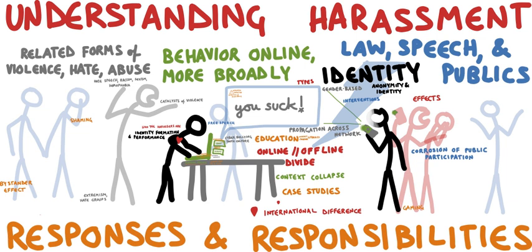Whereas content may be offensive in a non-specific way, harassment directs obscenities and derogatory comments at specific individuals focusing for example on gender, race, religion, nationality, and sexual orientation. This often occurs in chat rooms, through newsgroups, and by sending hate email to interested parties. Harassment on the internet also includes revenge porn.